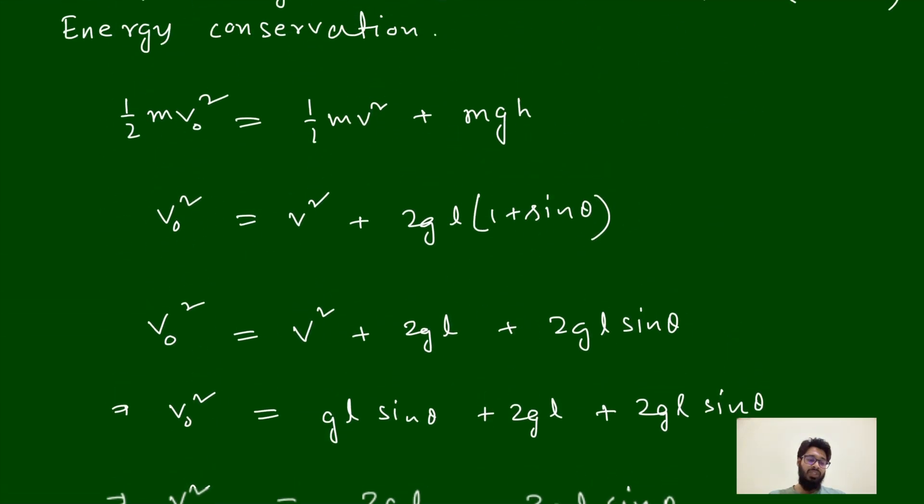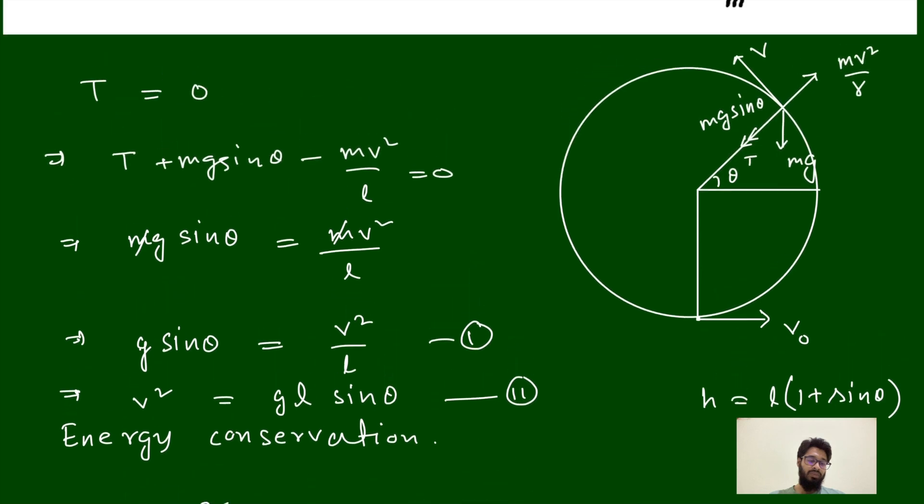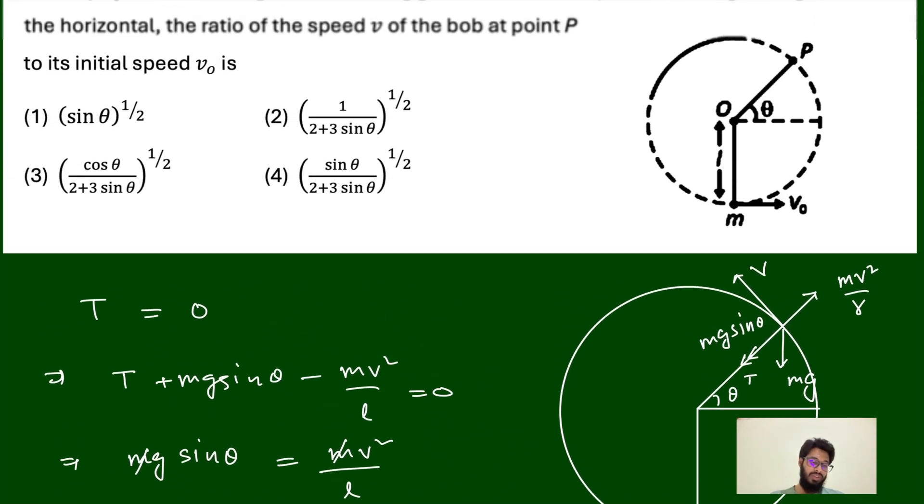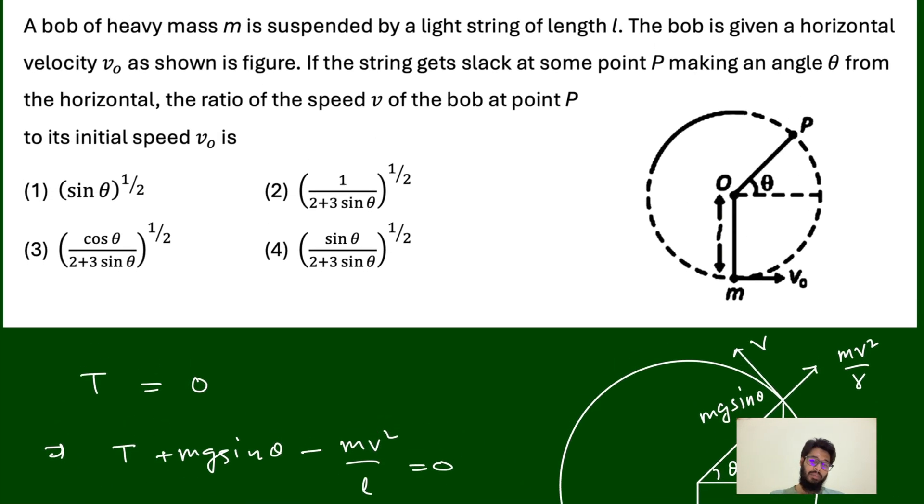This is your answer. Let us see which option is there. The option is, you can see, the option will be sin theta divided by 2 plus... the fourth option is your correct answer.